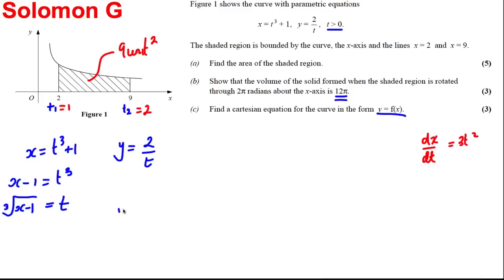Therefore, we can substitute in here and say that y is therefore 2 over the cube root of x, take away 1, and we have it in the Cartesian form we require. And we're done.